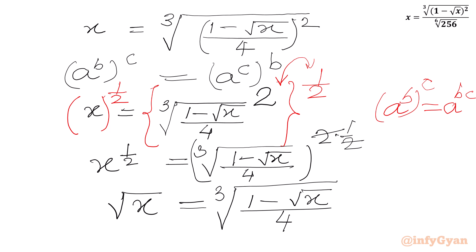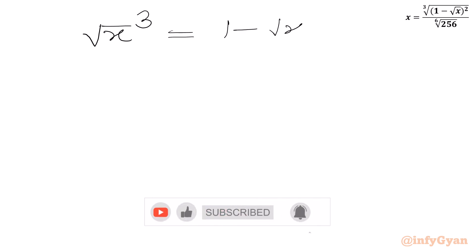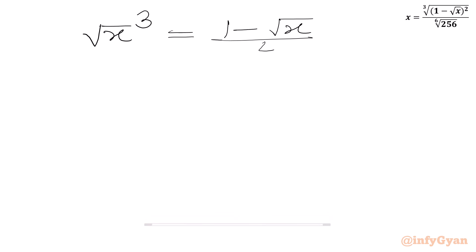Now we will cube both sides. Cube root and cube cancel out, so we get (square root x) cubed equal to 1 minus square root x over 4.